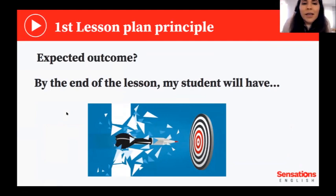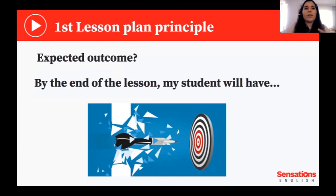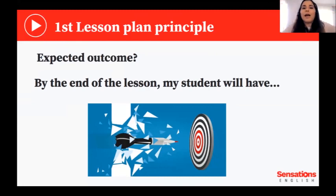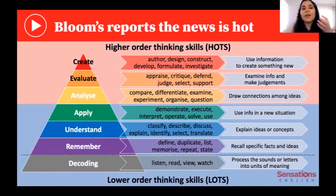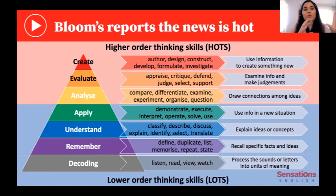Something very important when you're planning a video-based lesson is to think about the expected outcome — the desired outcome. You can write something like: 'By the end of the lesson, my students will have achieved something.' What do you want your students to achieve by the end of the lesson? To help you think about this outcome, you can use Bloom's taxonomy verbs, which categorize different verbs according to higher-order and lower-order thinking skills. You will get the slides later on, so you don't have to memorize all these verbs, but they can really help you identify the needs of your students.